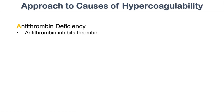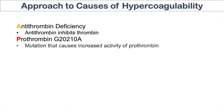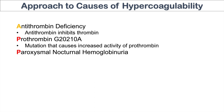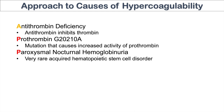The next cause is prothrombin G20210A. This is a mutation in prothrombin that makes it more active, increasing prothrombin activity to produce more thrombin, which increases the coagulation cascade. Another cause is paroxysmal nocturnal hemoglobinuria, a very rare acquired hematopoietic stem cell disorder that also increases the risk of venous and arterial thrombi.